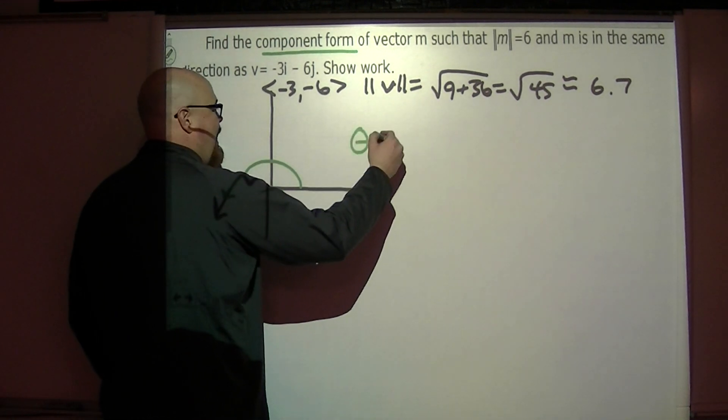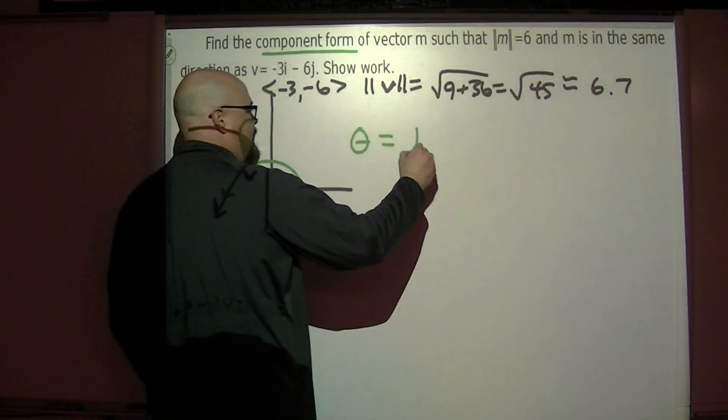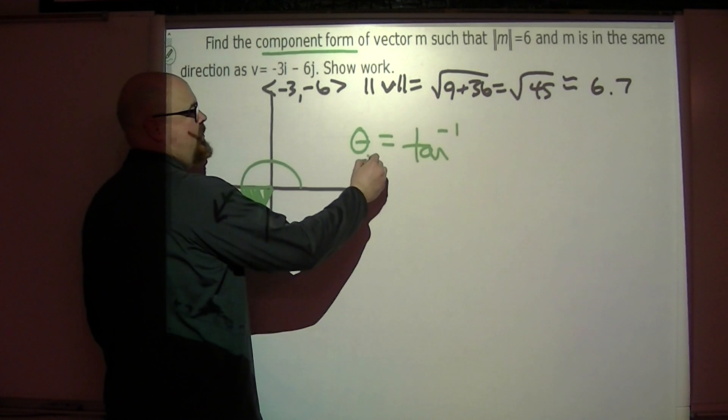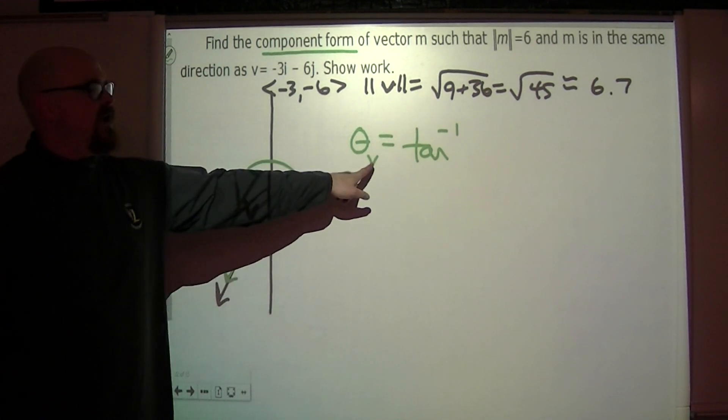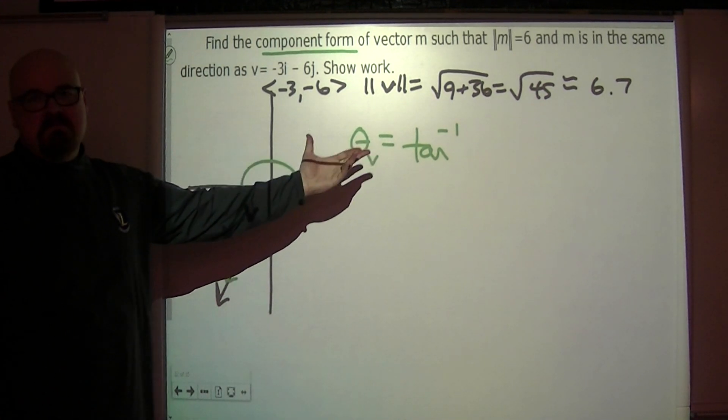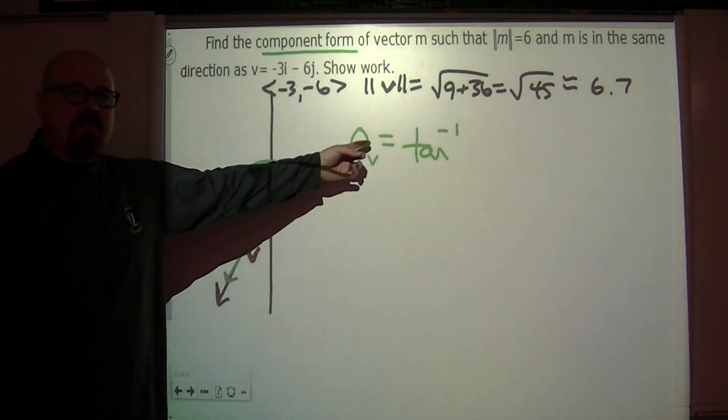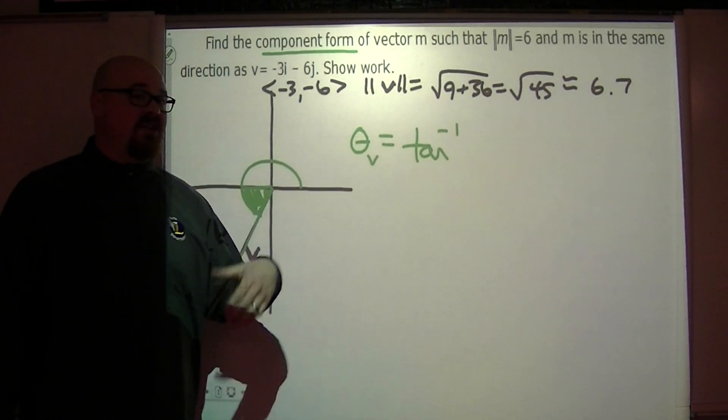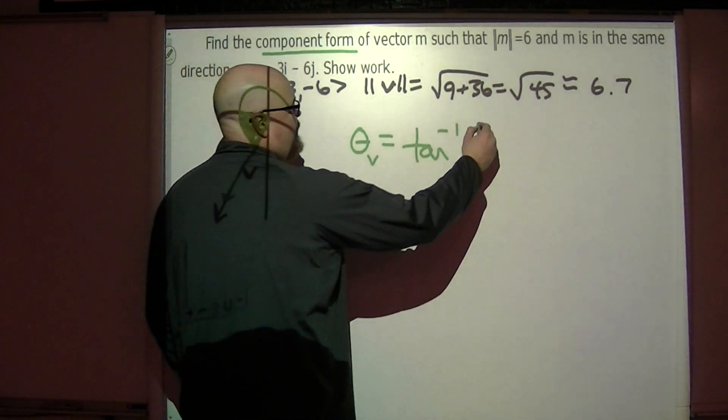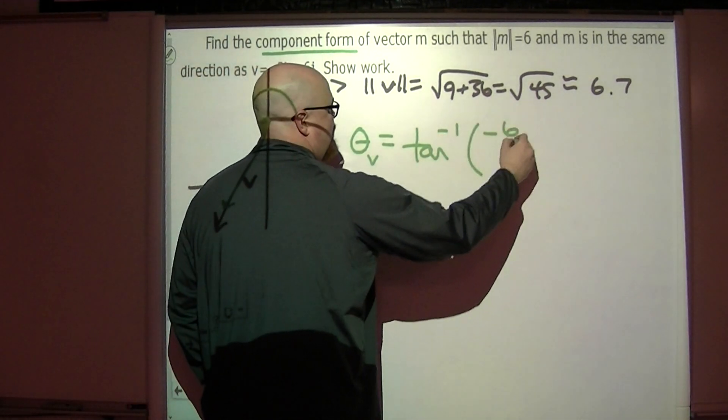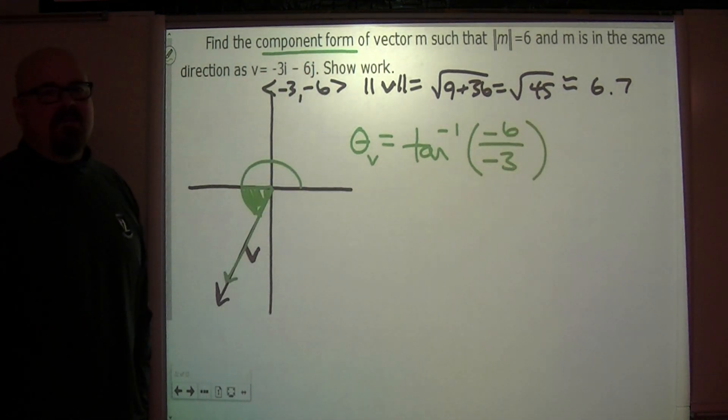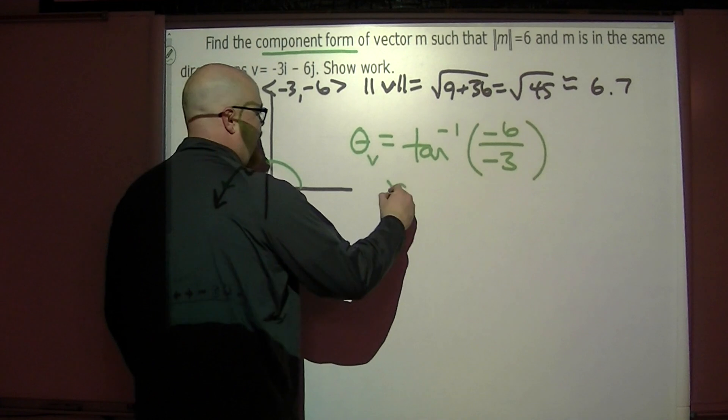Vector v gives us the direction for vector m. So based on that and our formula, and it's okay to use the formula at this point as long as you have a picture to help you out, this is the direction. I'm going to do this as the direction of vector v, theta v. Sometimes we use subscripts like this to give our variable a specialization or a last name if you will. It is the inverse tangent of v2 over v1.